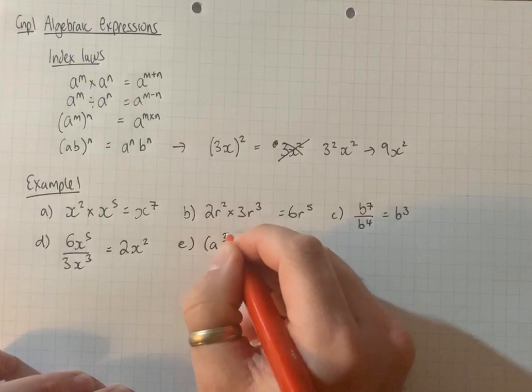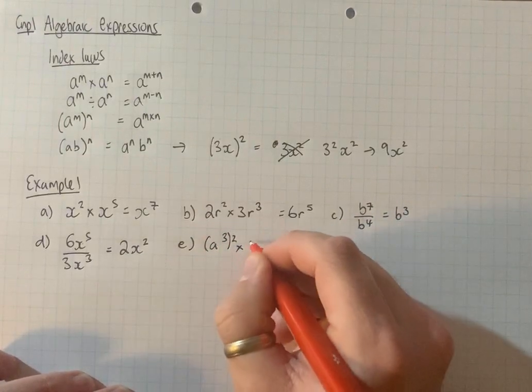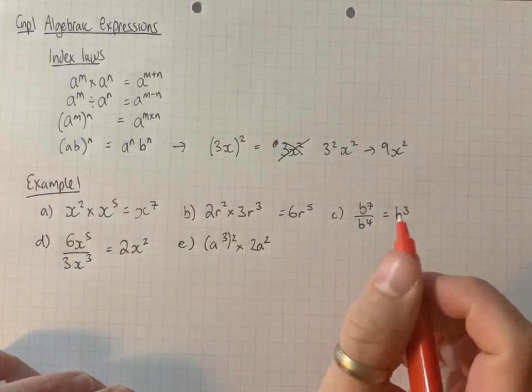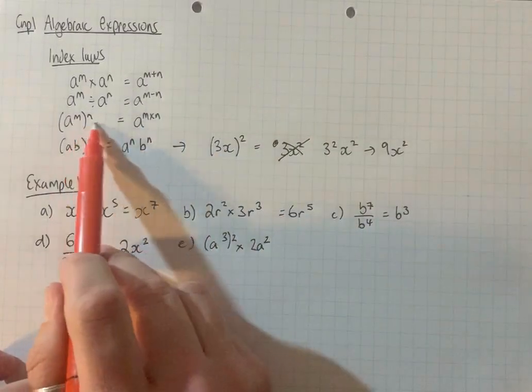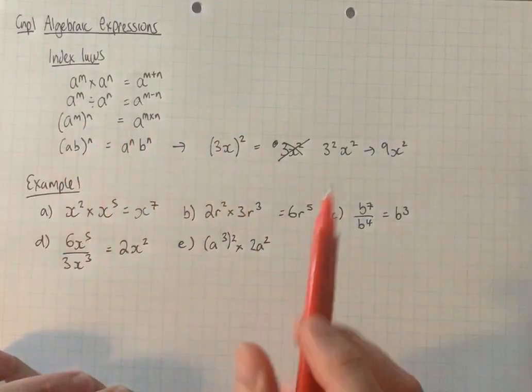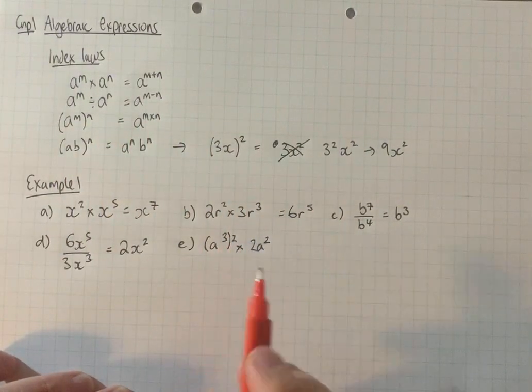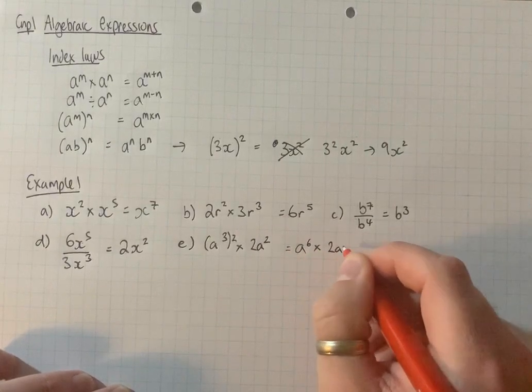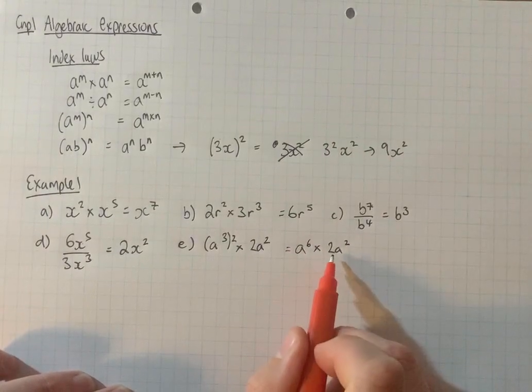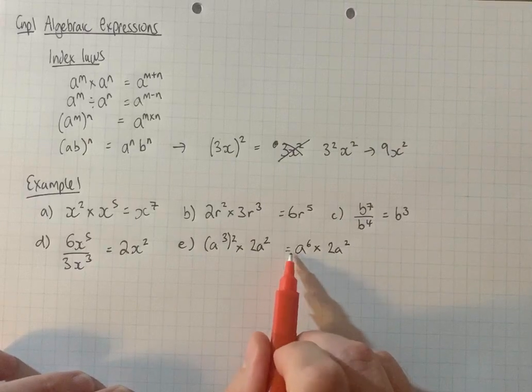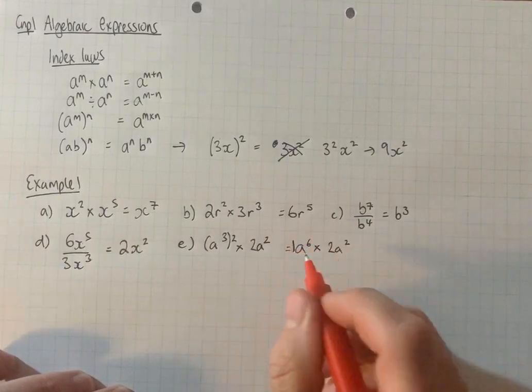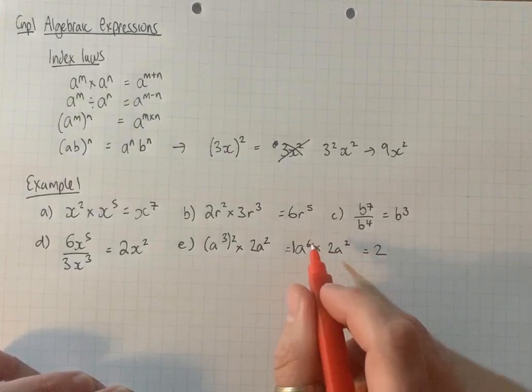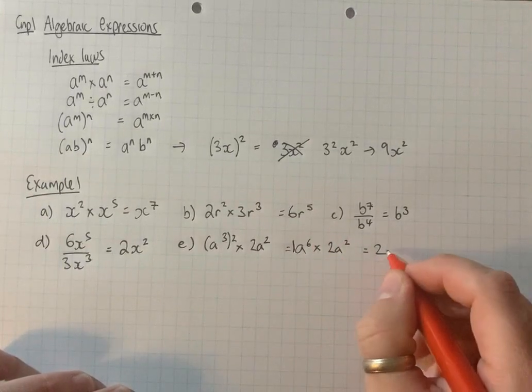a cubed squared times 2a squared. Well firstly let's use this rule here to deal with the brackets. Just multiply these powers together. 3 times 2 is 6. Deal with the coefficients. 2 times nothing. Well yes of course there is something. It's 1. 2 times 1 is 2. Same base so we add the powers together. 6 plus 2 is 8.